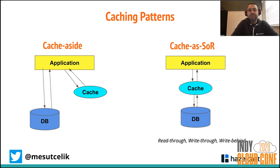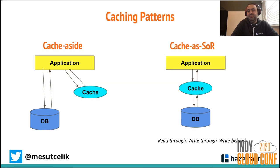The other caching pattern is cache as a system of record. For this pattern, you mainly interface with your caching solution — you do your puts and gets into your cache, and your cache synchronously or asynchronously connects with your database or storage. You've probably heard about read-through, write-through, and write-behind operations. The difference between write-through and write-behind is simply whether your cache synchronization is a sync or async operation.